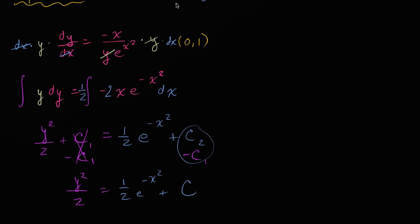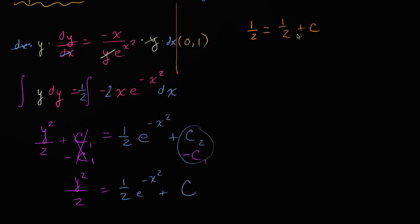Using the initial condition: when x is zero, y must equal one. Substituting: one squared over two equals one-half times e to the negative zero squared, which is one-half times one, plus c. So one-half equals one-half plus c, and subtracting one-half from both sides gives c equals zero. So the relationship between y and x through this point has c equal to zero.